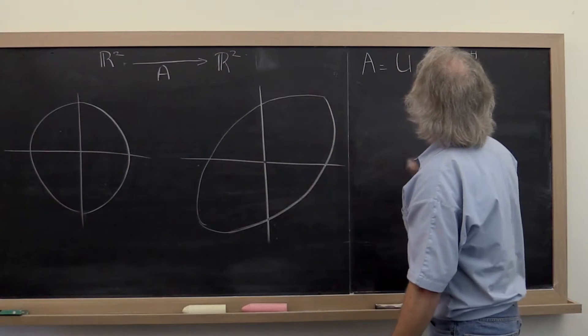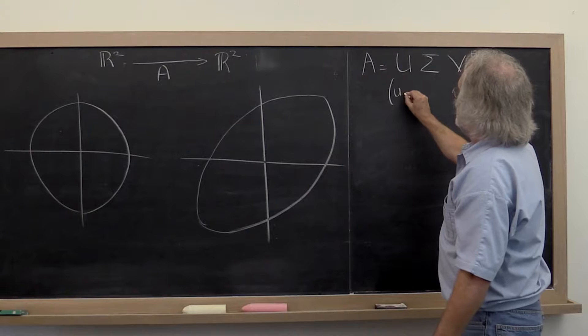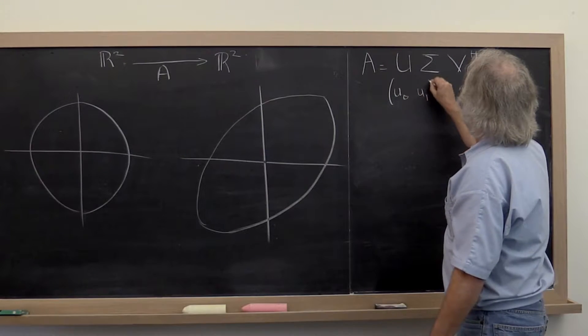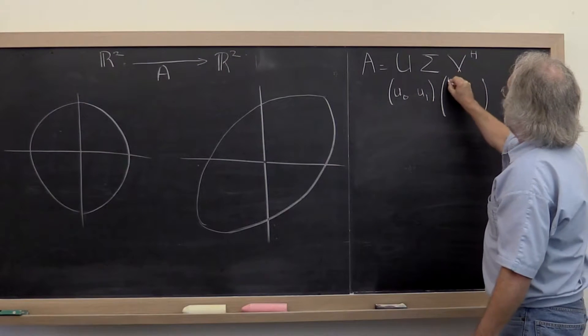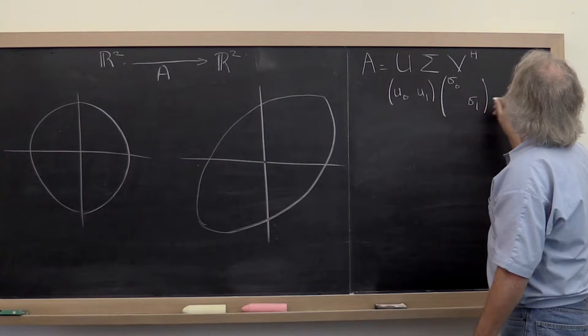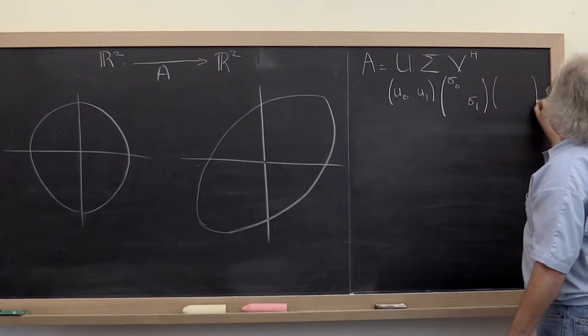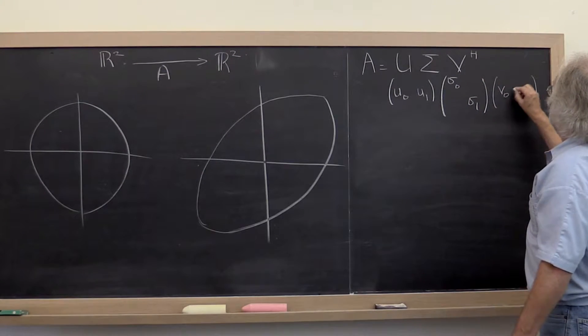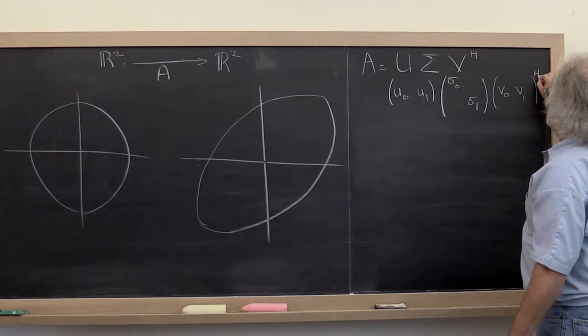So in this 2x2 case, U would consist of U0, U1. Sigma would consist of sigma 0, sigma 1. And V would consist of V0, V1.